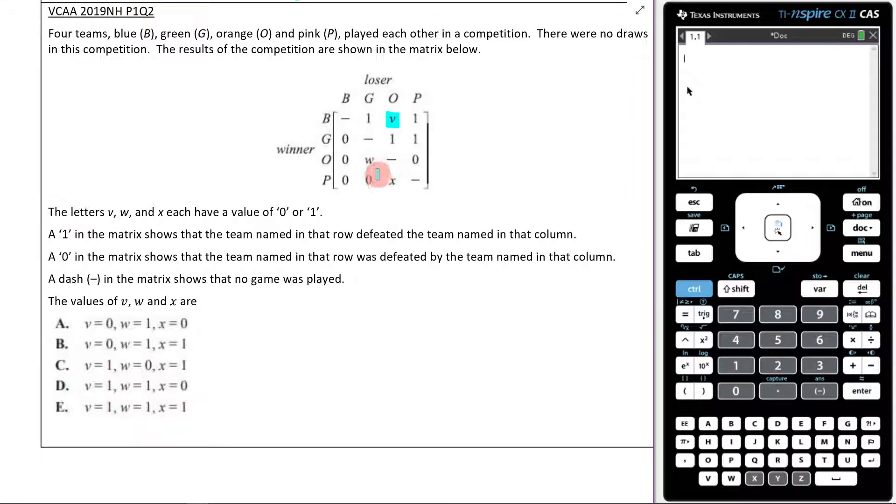V. We're trying to figure out what V is. Did B beat O? Well, another way to check this is to say, did O beat B? So do you see here what I'm doing? What I'm doing here, and I'll try to make this as clear as possible. Instead of going B to O, I'm going O to B. See what I'm doing there?